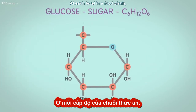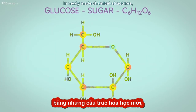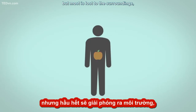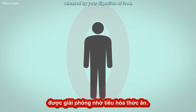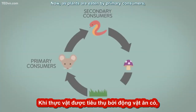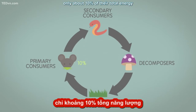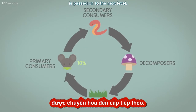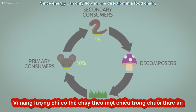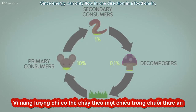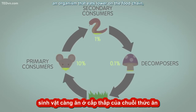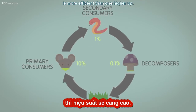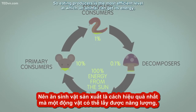At each level in a food chain, some energy is stored in newly made chemical structures, but most is lost to the surroundings as heat — like your body heat released by your digestion of food. As plants are eaten by primary consumers, only about 10% of their total energy is passed on to the next level. Since energy can only flow in one direction in a food chain, from producers on to consumers and decomposers, an organism that eats lower on the food chain is more efficient than one higher up. So eating producers is the most efficient level at which an animal can get its energy.